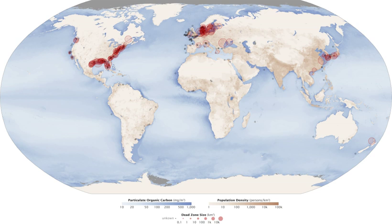A dead zone exists in the Lower St. Lawrence River area from east of the Saguenay River to east of Baie-Comeau, greatest at depths over 275 metres and noticed since the 1930s. The main concern for Canadian scientists is the impact on fish found in the area.